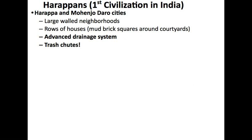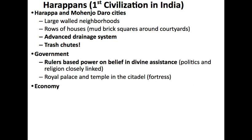They establish two major cities: Harappa — it's pretty typical for early civilizations to name their cities after themselves — and then there's Mohenjo-Daro. These are two cities which we have evidence of today what they looked like. They were large cities with walled-off neighborhoods, and they had row houses made out of mud bricks. There was almost always a courtyard in the middle. We found evidence of an advanced drainage system so that excess water would drain away from the city. We also found ancient trash chutes to try and keep the cities clean, which is not common in most ancient cities we've discussed.